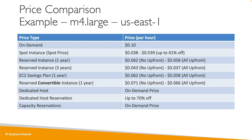In terms of price comparison, here's a table with one example — an M4 large in US-East-1 where the on-demand price is 10 cents. The spot price can be up to 61% off. Reserved instances offer different pricing depending on one year vs. three years and no upfront vs. all upfront. EC2 savings plans offer the same discounts as reserved instances. Convertible reserved instances and dedicated host reservations are also shown — up to 70% off with reservation. Capacity reservation is at the on-demand price. The exam will ask you to know which instance type fits a given workload.